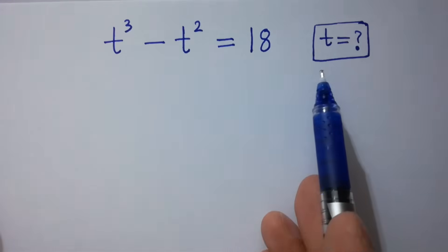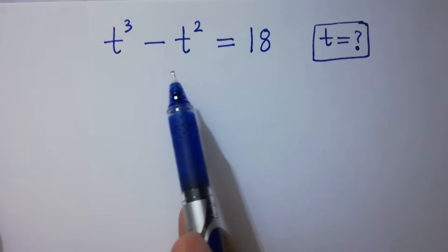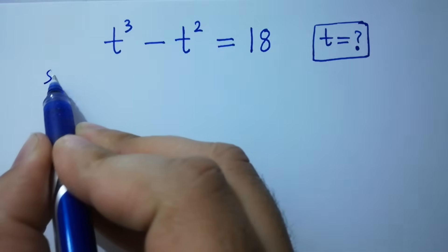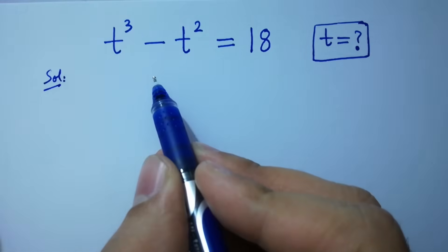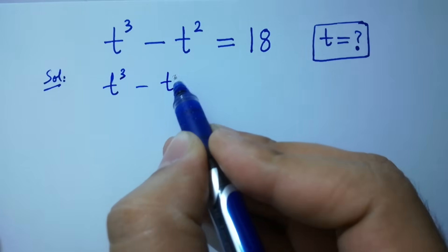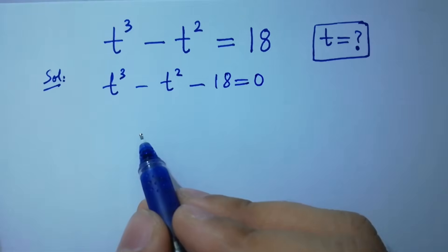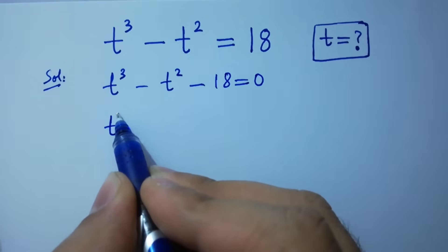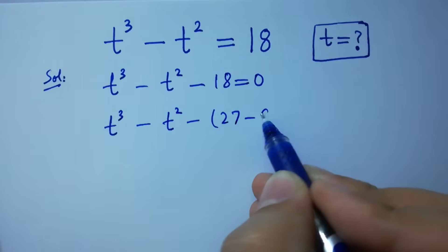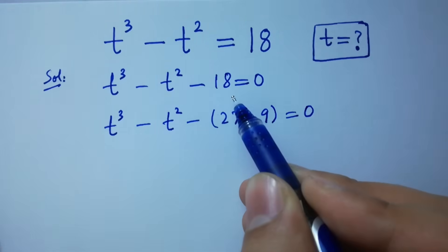Hello friends, find the value of t if t³ - t² = 18. Let's have a solution. It can be written as t³ - t² - 18 = 0, which is the same as t³ - t² - 27 - 9 = 0, since 27 - 9 = 18.